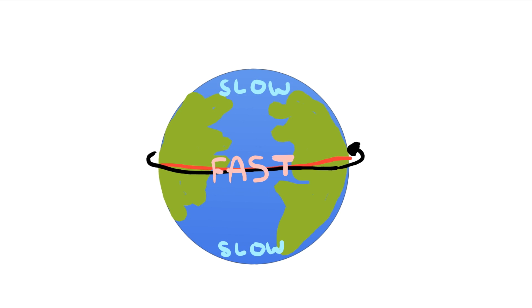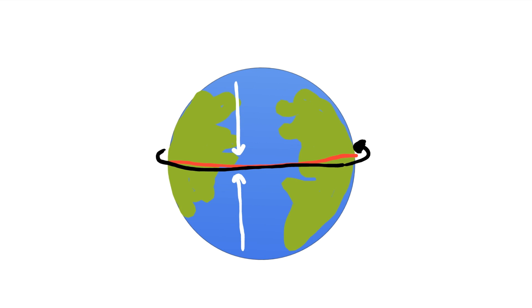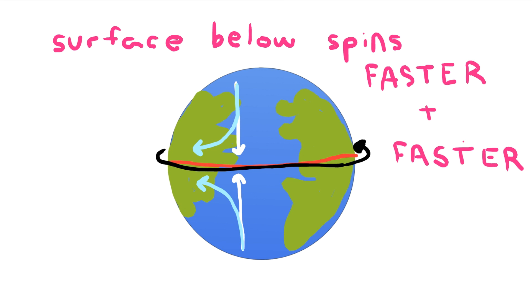The differences in surface speeds make winds curve from the reference frame of the Earth. Specifically, winds moving towards the equator curve opposite the direction that the Earth spins, and those moving towards the poles curve with the Earth. In the former scenario, the surface below the wind spins faster and faster, making the wind fall behind its ideal course.